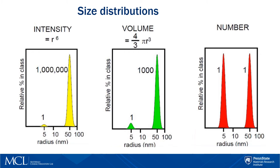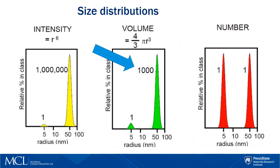In number distribution, every particle has equal weighting. For example, a 5 nm particle is equivalent to a 50 nm particle in number distribution. However, if you look at the volume distribution, the 50 nm particle has 1000 times as much volume as the 5 nm particle.